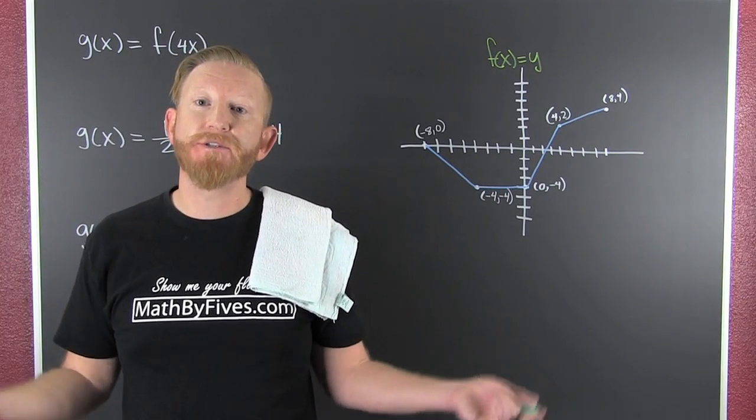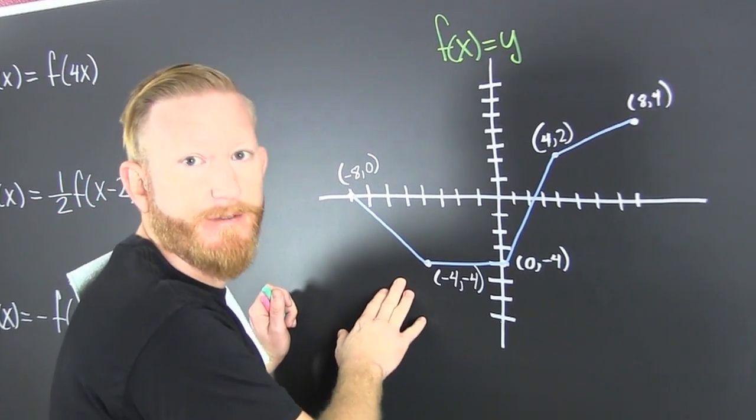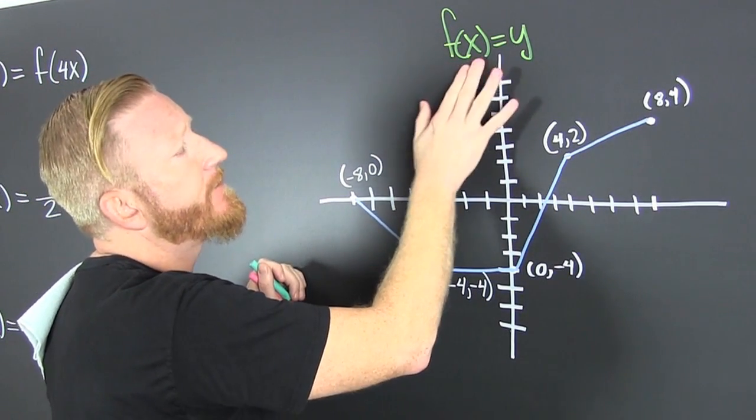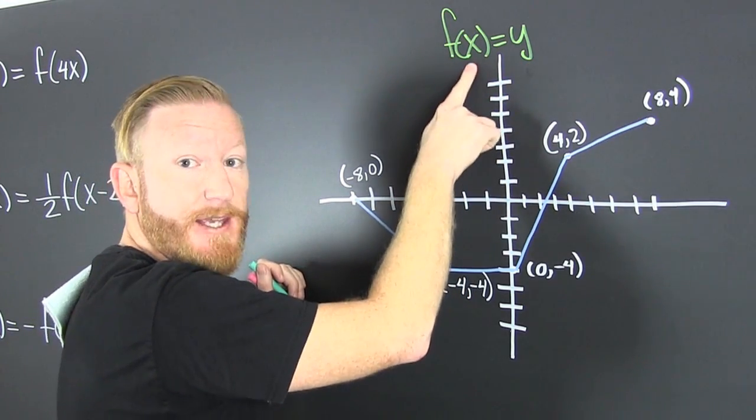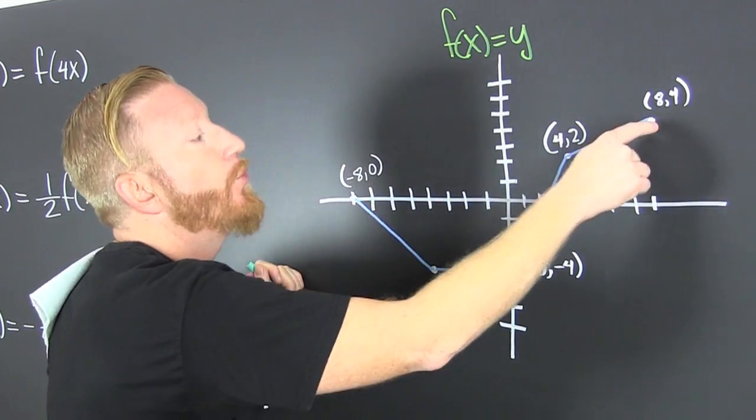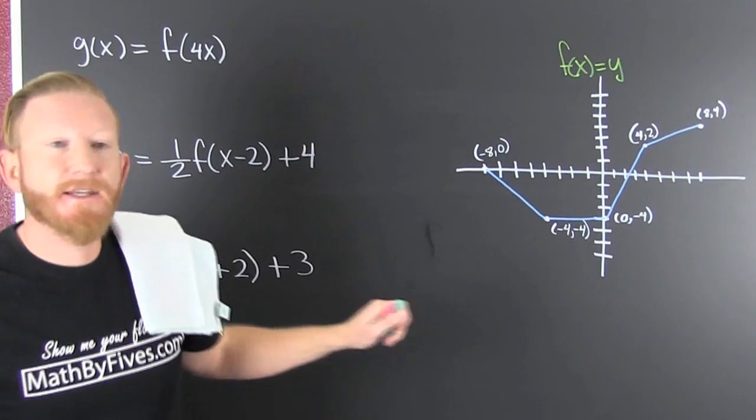Translating the graph with function notation. Here's our function. That's our f of x. f of x is the function formerly known as y. Anytime we see the f, we're going to think y. When we see x, we think x. Our function looks like this. We are going to dilate and translate this guy.